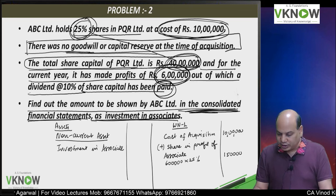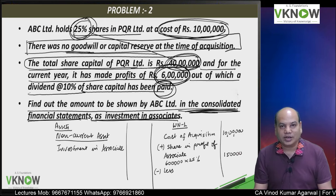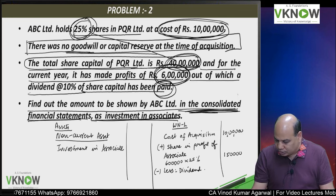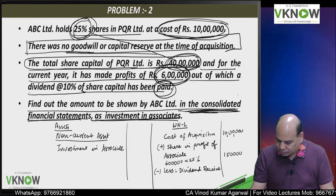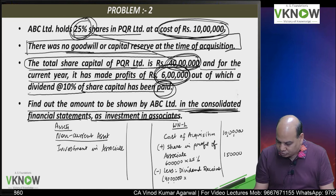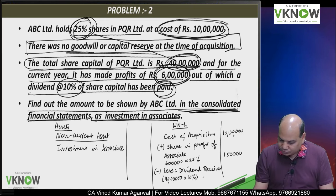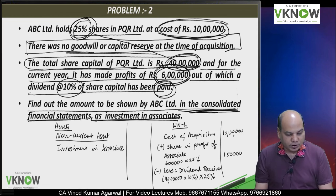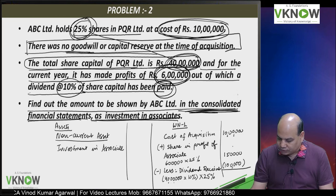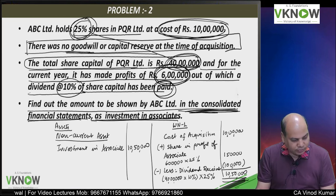When the associate makes profit, the net asset increases. But when the associate pays dividend, the net asset of associate decreases, so we are going to reduce the carrying amount of investment. Less dividend received: total dividend paid is 40 lakh into 10 percent. ABC Limited will receive only 25 percent, so that is 4 lakh into 25 percent — 1 lakh. Therefore, the carrying amount at the end of the year should be 10 lakh 50,000.